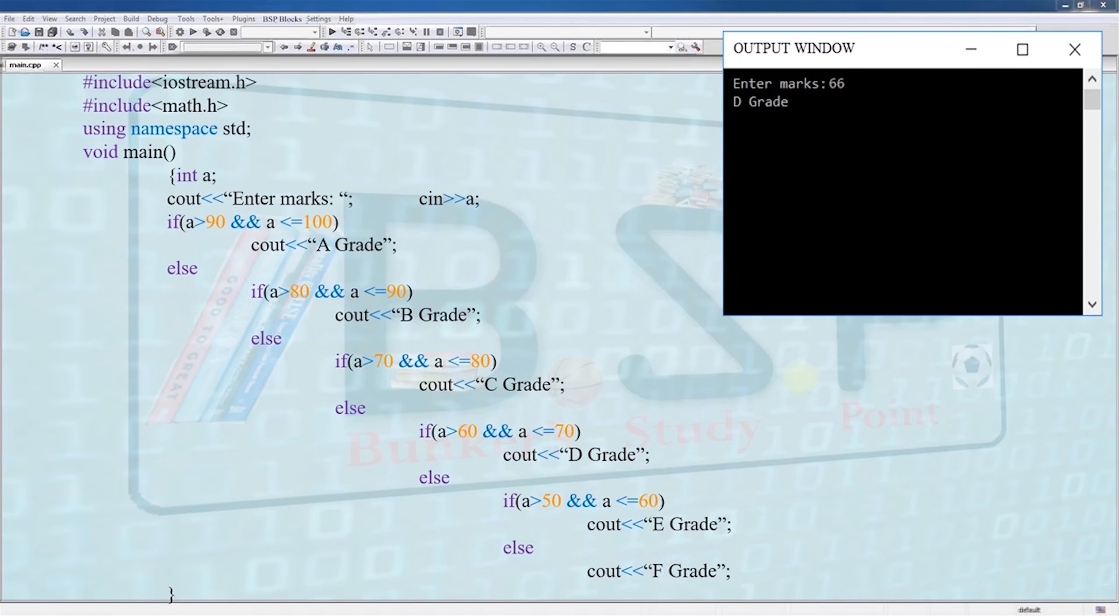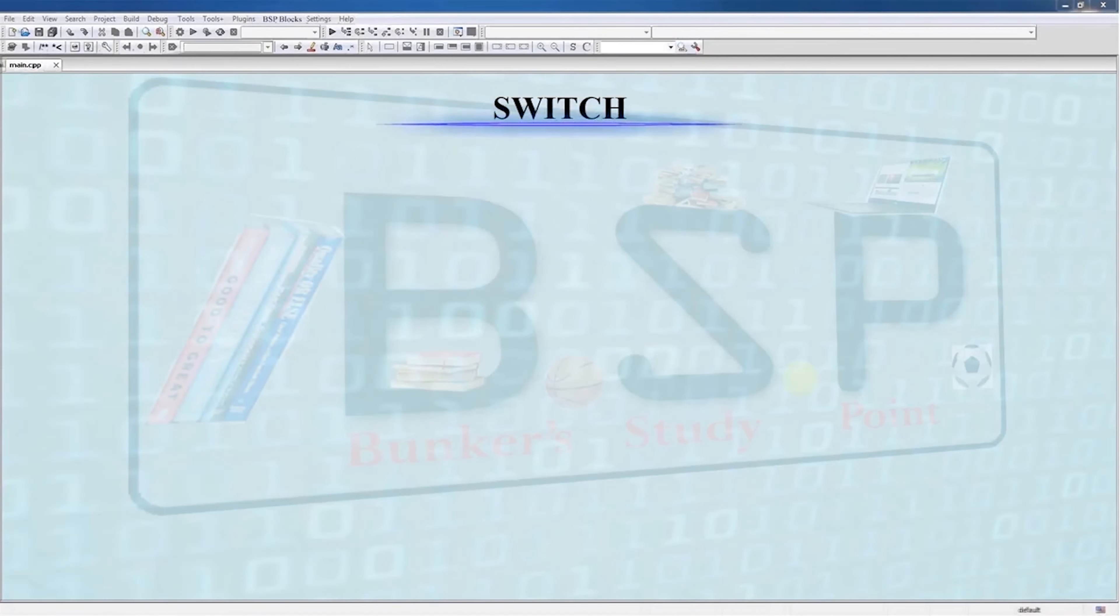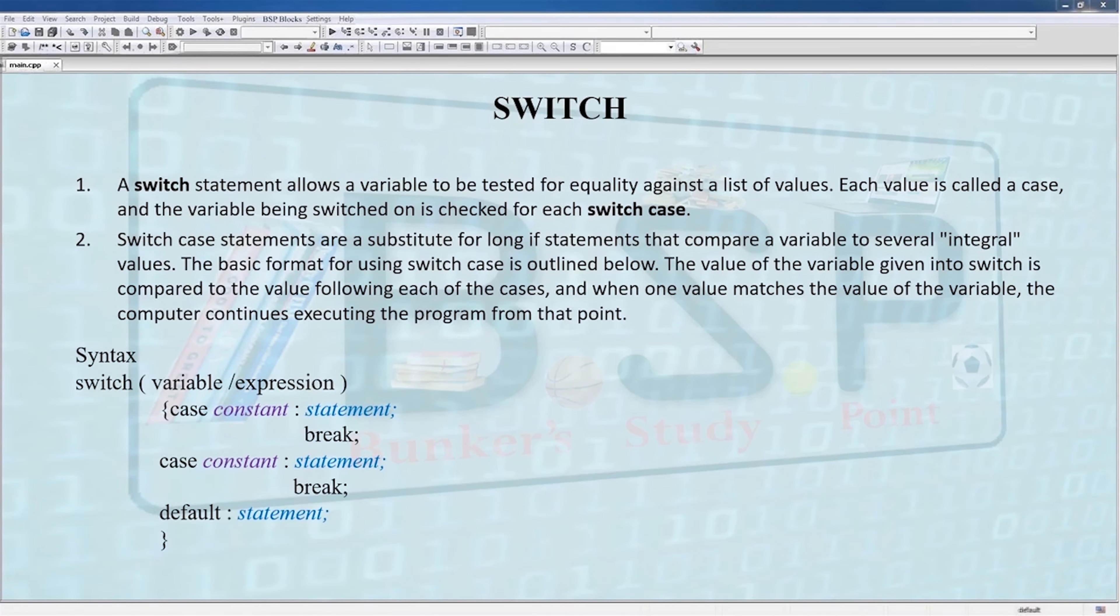Coming to today's topic: switch. A switch statement allows a variable to be tested for equality against a list of values. Switch case is like an alternative for nested if-else when the value set is very high or very complex. Switch statement gives a simpler, understandable format of the code. Syntax is as follows: switch, then parenthesis, inside parenthesis a variable or an expression which evaluates to a single value, then followed by two curly braces that enclose the body of switch.